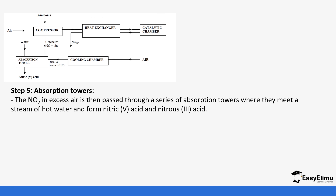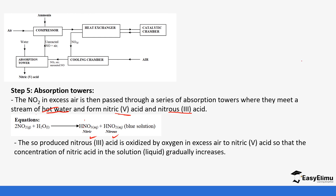Finally, the nitrogen dioxide is taken to the absorption tower, where a stream of hot water — it is important to remember it is hot water — reacts with it to form a mixture of nitric acid (HNO₃) and nitrous acid (HNO₂). Air is also bubbled into the absorption tower to oxidize the nitrous acid (HNO₂, nitric III acid) to nitric acid (HNO₃, nitric V acid).